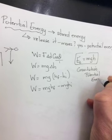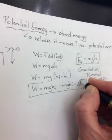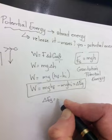This then is the change in gravitational potential energy, because it's the final minus the initial. So you'll sometimes see it written as delta Eg is equal to Mg delta H.